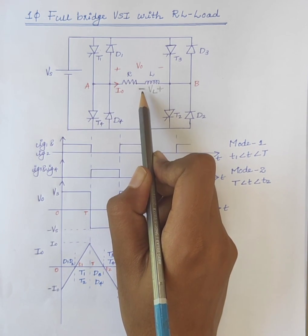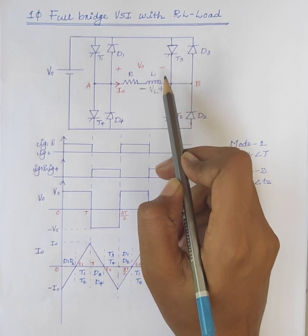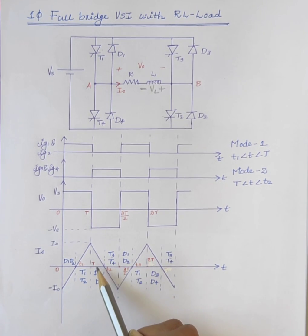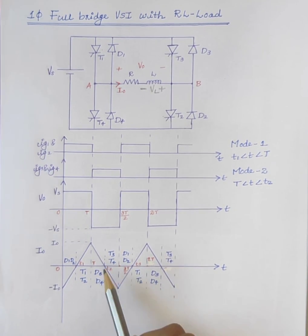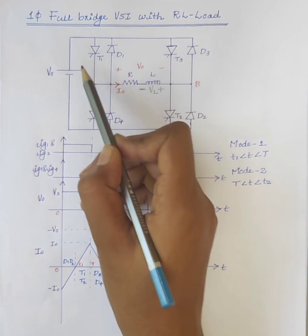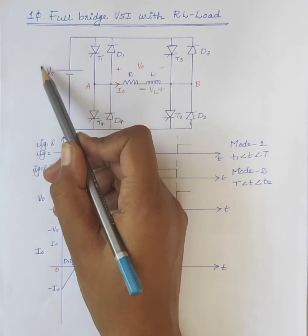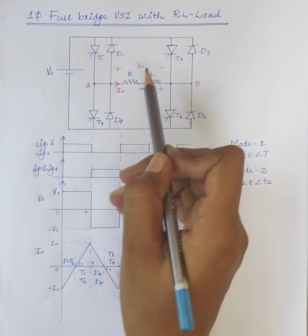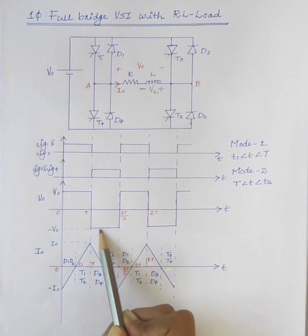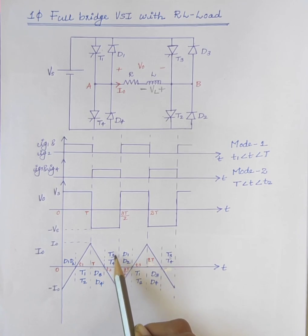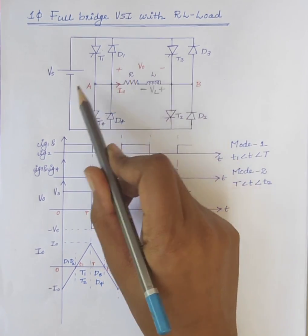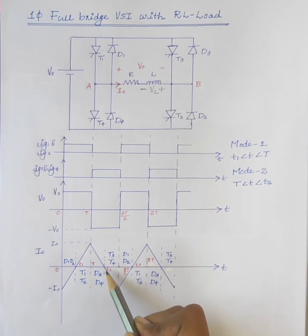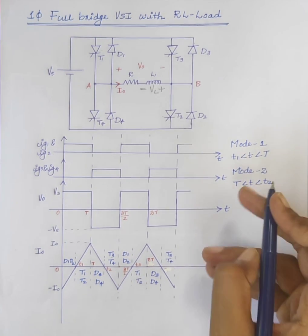Here also the current direction is from A to B. As the energy stored in the inductive load is fed back to the source, the load current decreases exponentially and goes to zero at instant T2. Here B is connected to the positive terminal of the supply voltage and A is connected to the negative terminal of the supply voltage. Therefore the output voltage V0 is minus Vs. When all the energy stored in the load is returned back to the supply, diodes D3 and D4 are turned off at T equal to T2.